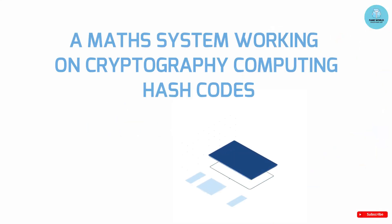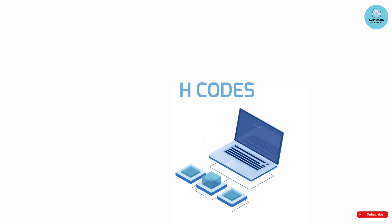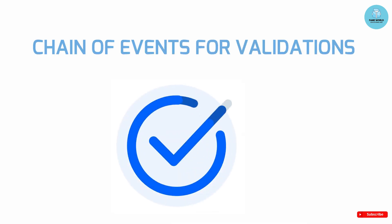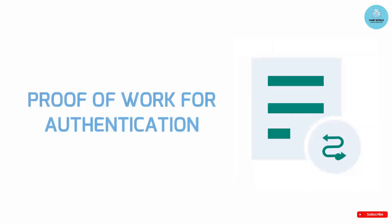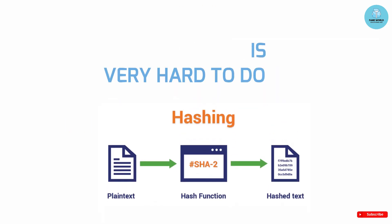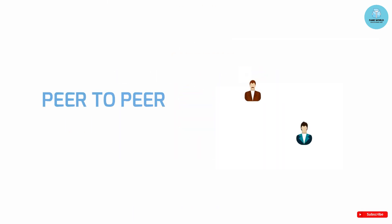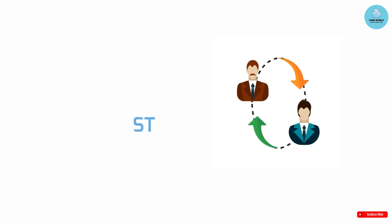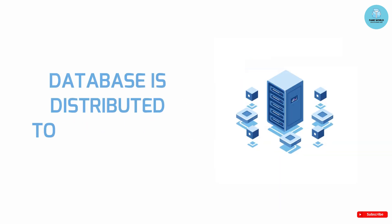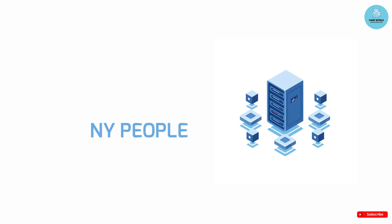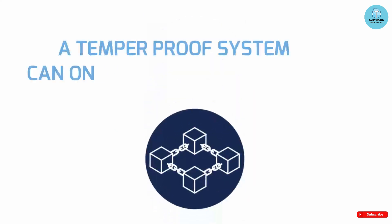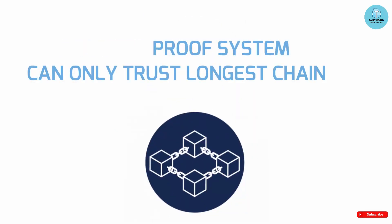Blockchain is: 1. A math system working on cryptography computing hash code. 2. A chain of events for validations. 3. All blocks contain previous transactions. 4. Proof of work for authentication. 5. Hash function is very hard to do. 6. Peer-to-peer for trust. 7. Database is distributed to many people. 8. A tamper-proof system that can only trust the longest chain.